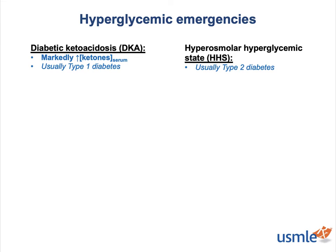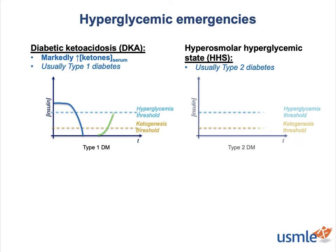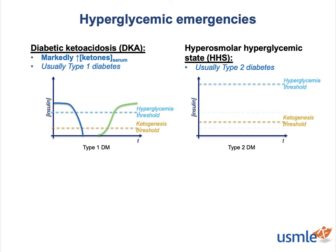Why are ketoacids typically produced in type 1 but not type 2 diabetes? Conceptually, there's a threshold insulin concentration below which a patient will become hyperglycemic — and that's where most poorly controlled diabetics live. But the threshold for the kind of robust ketogenesis you see in DKA is a lot lower. In type 1 diabetes, insulin rapidly plummets to zero via autoimmune destruction of the gland, so insulin levels can bottom out low enough to trigger ketogenesis unless insulin is exogenously administered.